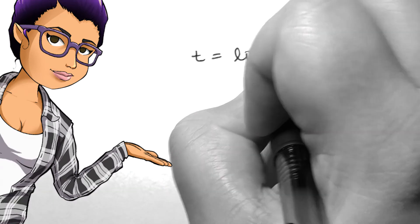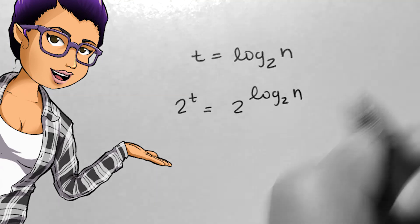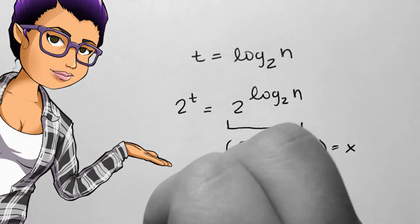Given the logarithmic equation t = log base 2 of n, we'll need the exponential with base 2 to cancel out the log base 2. Apply the exponent to both sides to get 2^t = n.